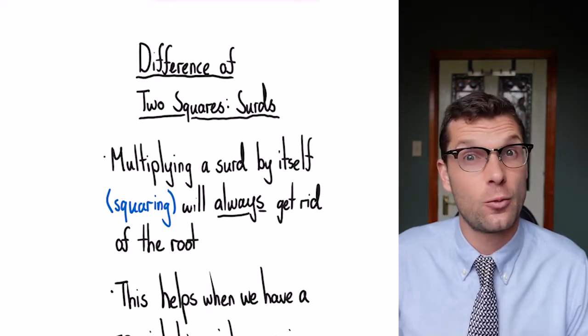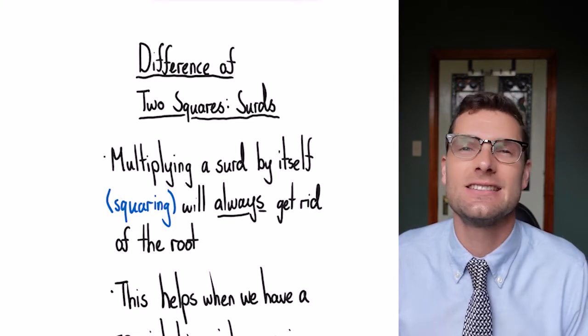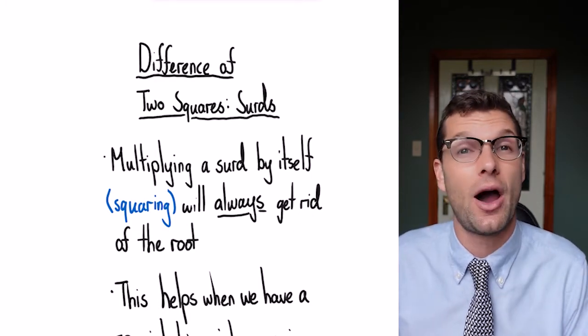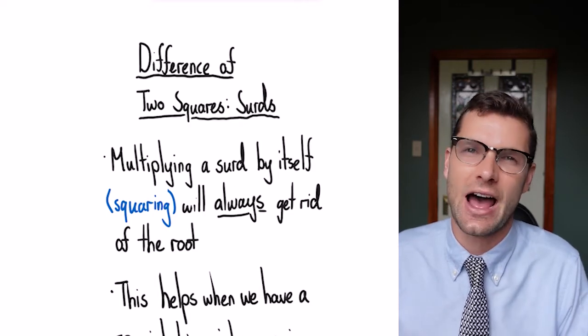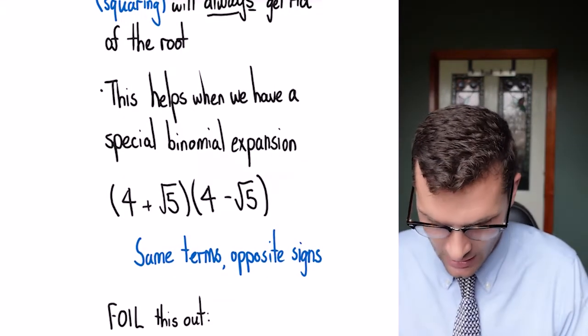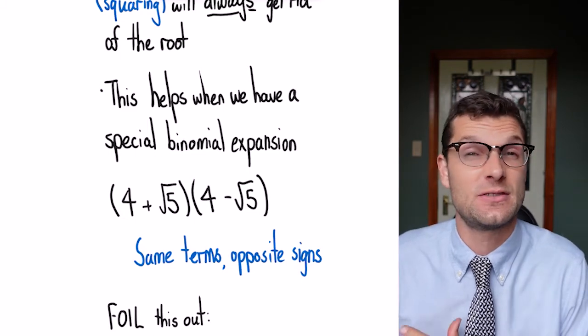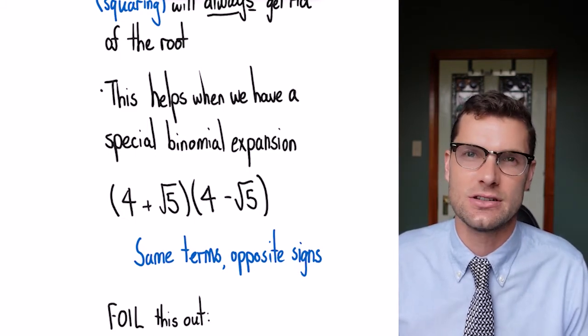The main point we need to know before we jump into this is that when we multiply a surd by itself, all that's left is the integer that was under the square root. This helps us out a lot with these types of special binomial expansions.